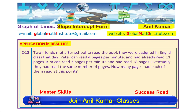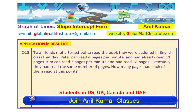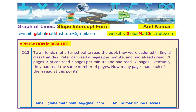The question here is: two friends met after school to read the book they were assigned in English class that day. Peter can read 4 pages per minute and had already read 11 pages. Kim can read 3 pages per minute and had read 18 pages. Eventually, they had read the same number of pages. How many pages did each of them read at this point?